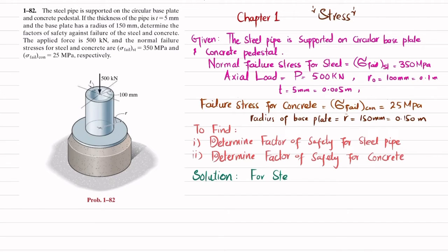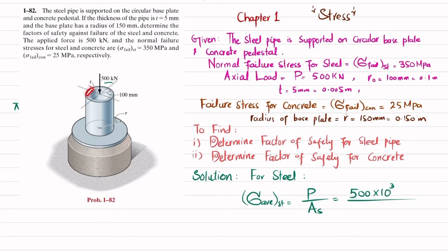Let's start with the solution. First, I will find the average normal stress in the steel pipe. The average normal stress equals load per unit area of steel. The load is 500 kilonewtons, written as 500 × 10³. The area is the cross-sectional annular area of the pipe. Since r_outer is 100 millimeters and thickness is 5 millimeters, r_inner equals r_outer minus t, which gives r_inner = 0.1 − 0.005 = 0.095 meters.